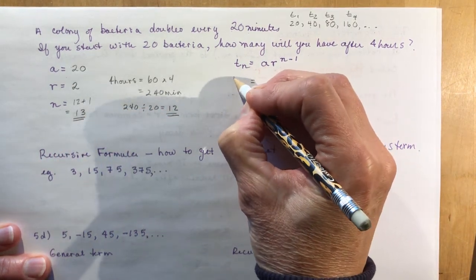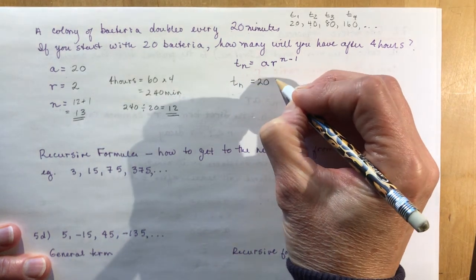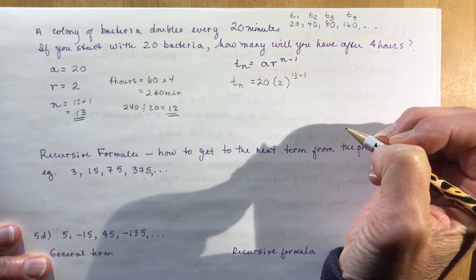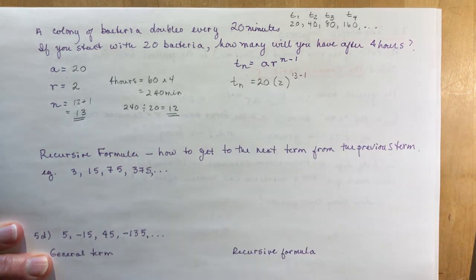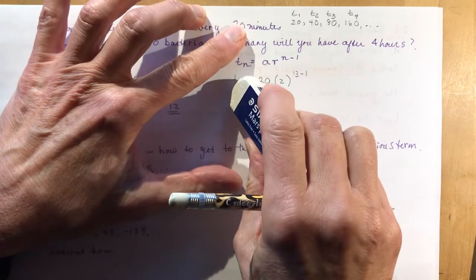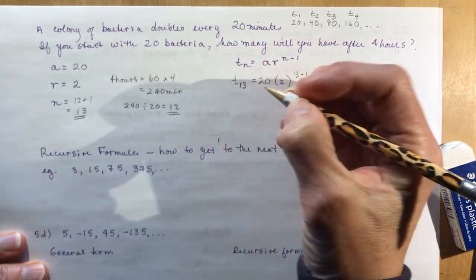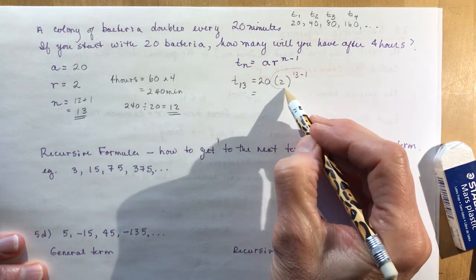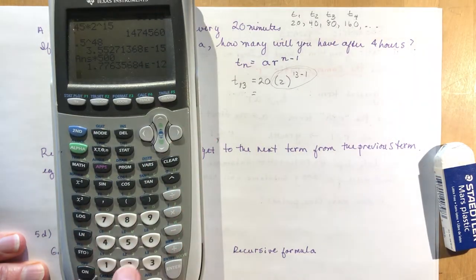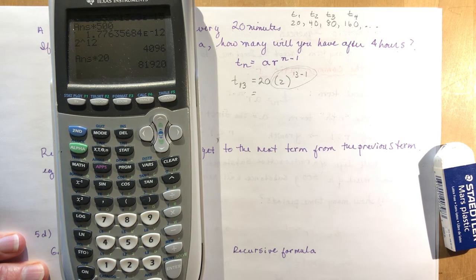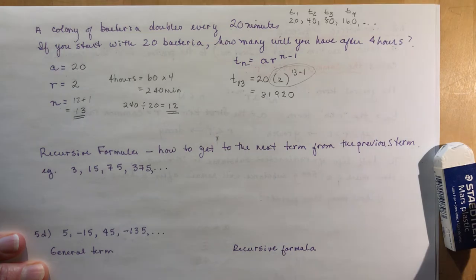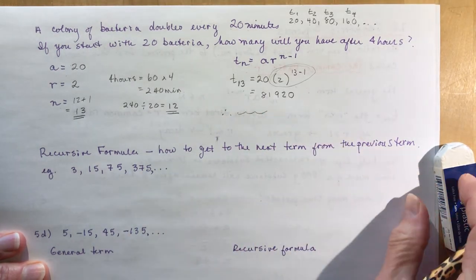Now: t13 equals 20 times 2 to the power of 13 minus 1, which is 2 to the power of 12 times 20. That gives 81,920 bacteria. Then give your concluding statement — I'll leave that part to you.